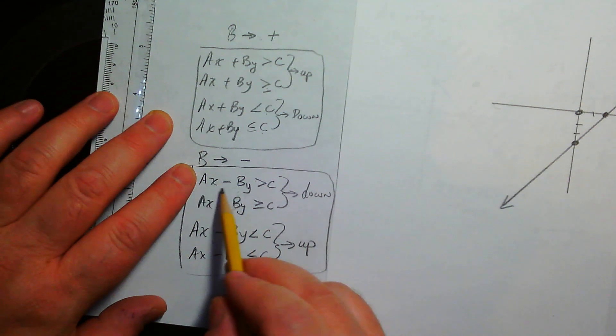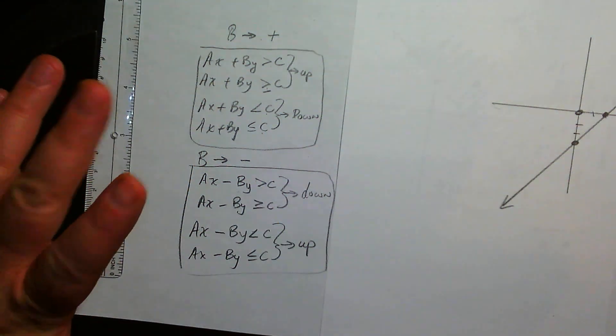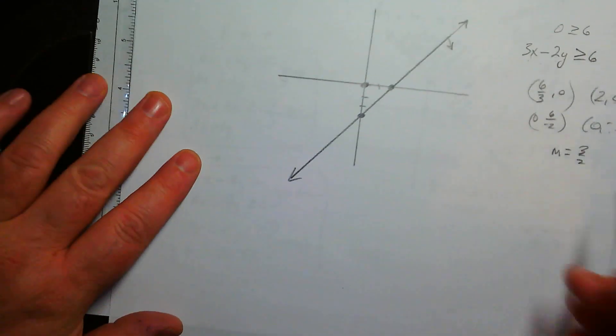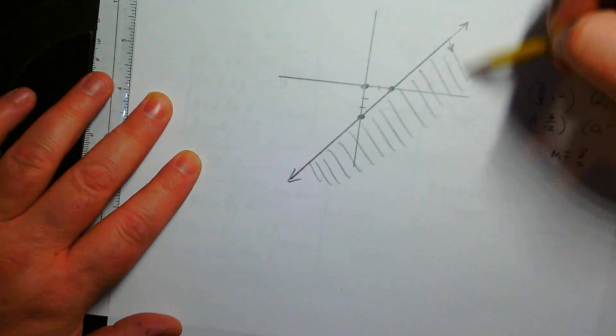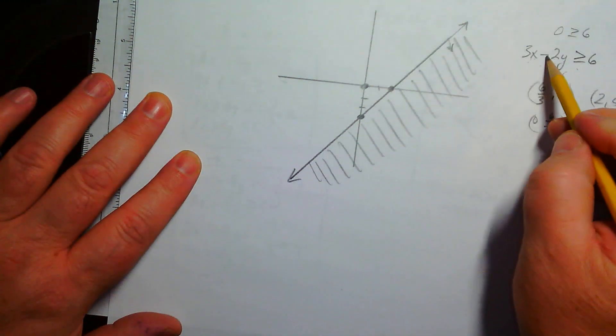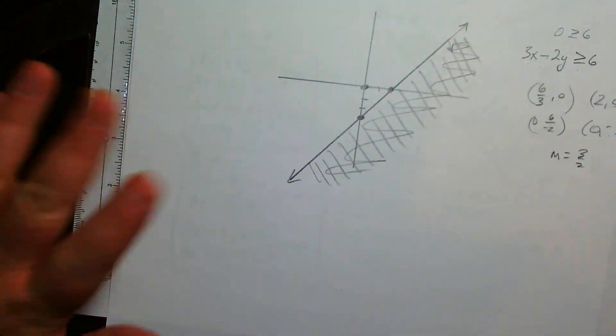When you solve for B, you would end up dividing both sides by a negative. And if you remember, when you divide by a negative, the inequality symbol turns around. That's why that is the case. So we have greater than, but we have the opposite. So that's going to be down. That's going to be below. So you'd shade below just like this, and you'd be done.